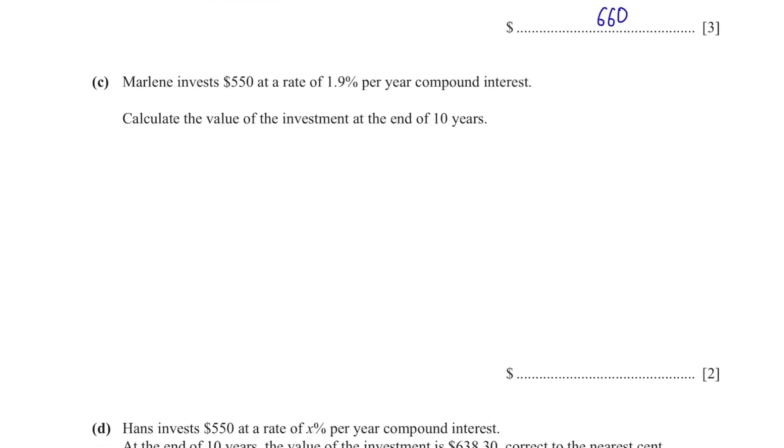Part C. Marlene invest $550 at a rate of 1.9% per year compound interest. Calculate the value of the investment at the end of 10 years. For compound interest, we have a formula to follow. We multiply the original amount with 1 plus 1.9%, which is to the power of the number of years, 10. Use your calculator to key in everything and you get $663.90 as the final answer, correct to the nearest cent.